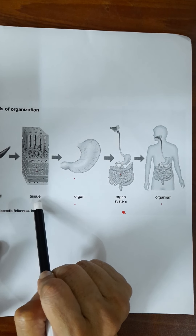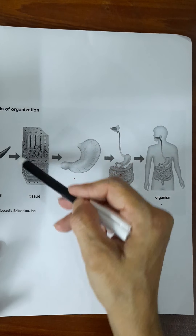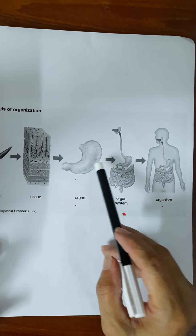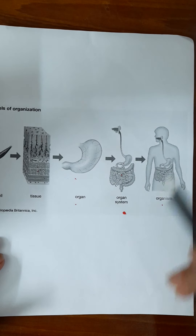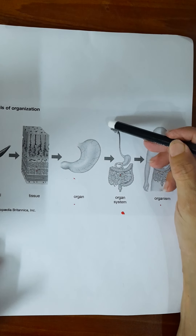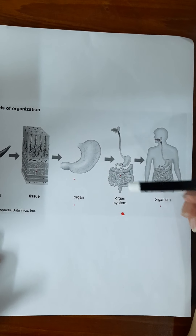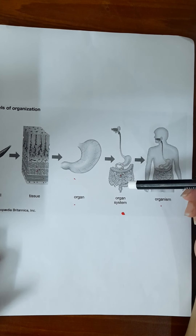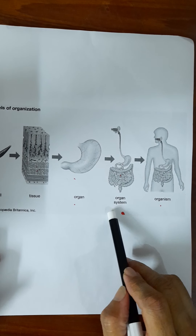Similar cells combine together to make a tissue. Then different tissues combine together, performing the same job, to make an organ. Different organs having the same function make an organ system. For example, the mouth, esophagus, stomach, small intestine and large intestine all help in digestion — they are different organs but share the same job — so they group together to perform a specific function and form the organ system.